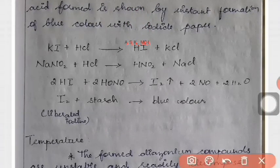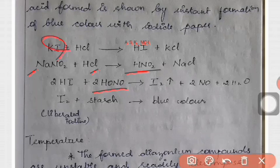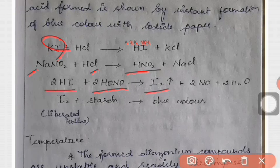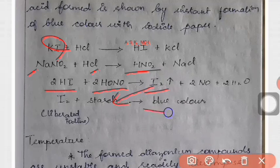Sodium nitrite and HCl gives nitrous acid. This excess nitrous acid reacts with potassium iodide to give iodine, and that iodine reacts with starch to give blue color.